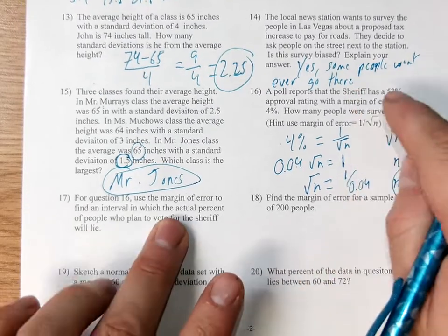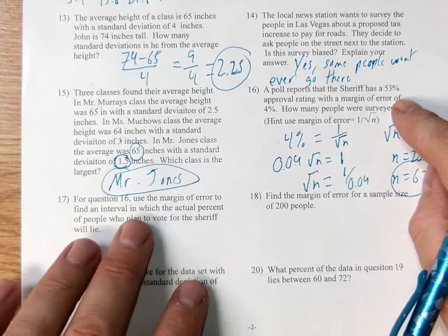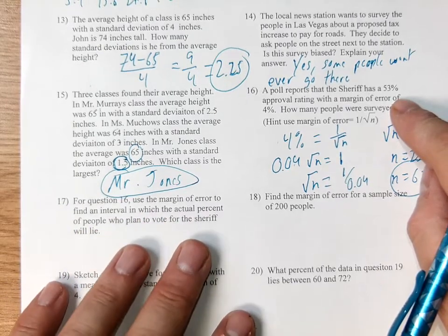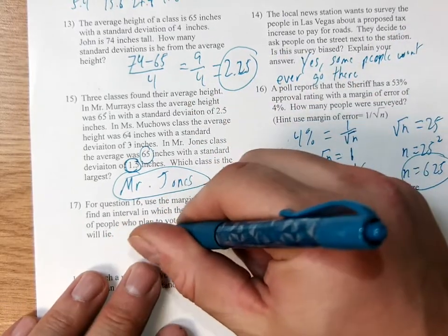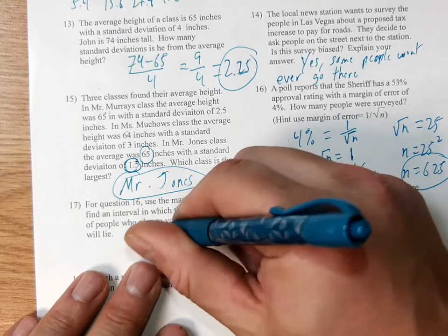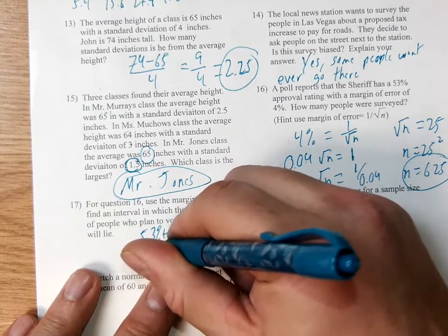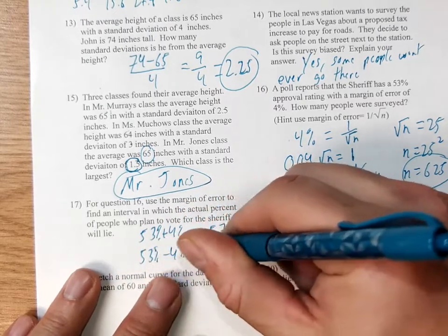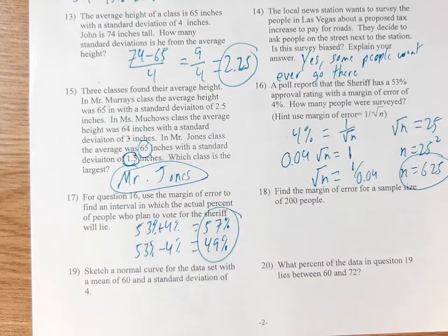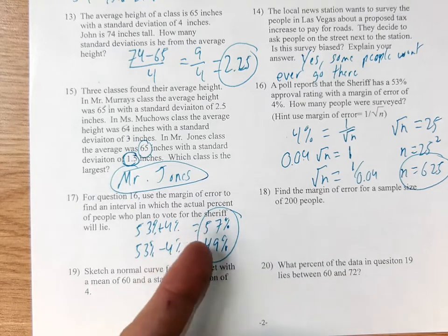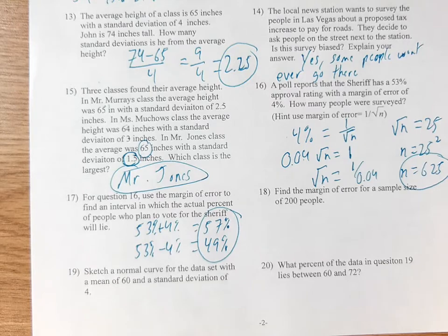We're going to use the same statistics on number 17 as we used on 16. So what is the actual percent of people who plan to vote for the sheriff? Well, it's going to be between 53 plus 4%, 57%, and 53 minus 4%, 49%. So somewhere between 49% and 57% will vote for the sheriff, meaning that he's not guaranteed to win. If less than half people vote for him, he's not guaranteed.